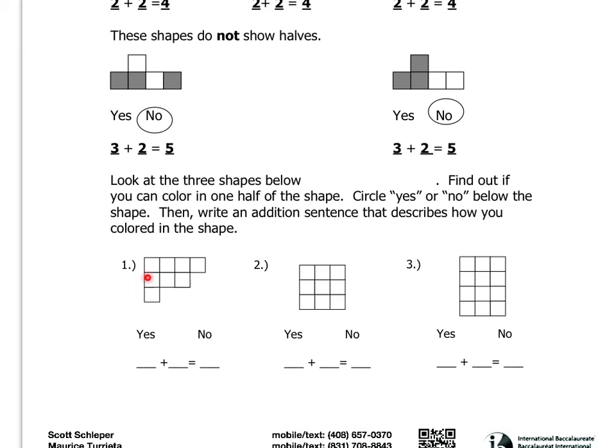So here you'd have to see if you can shade in half of the squares and then leave the other half unshaded. If you can, then you should be able to write down one number plus itself equals the total number of blocks that you have here. Okay, and so you're going to have to do this with all three of these.